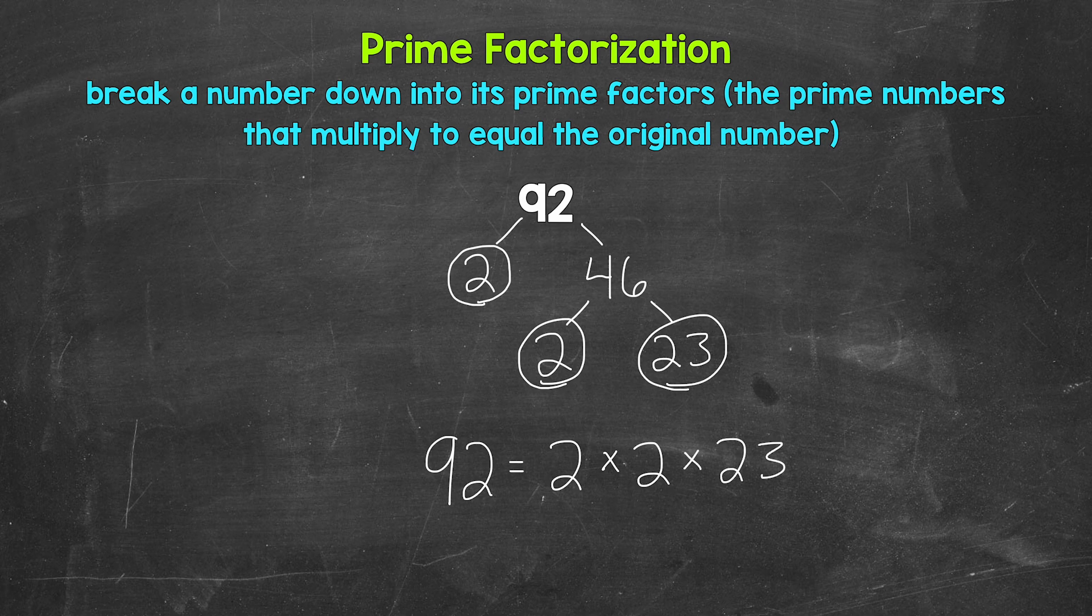If we have the correct prime numbers, they will multiply to equal our original number. So let's check here. 2 times 2 is 4, times 23 is 92. So we are correct here.